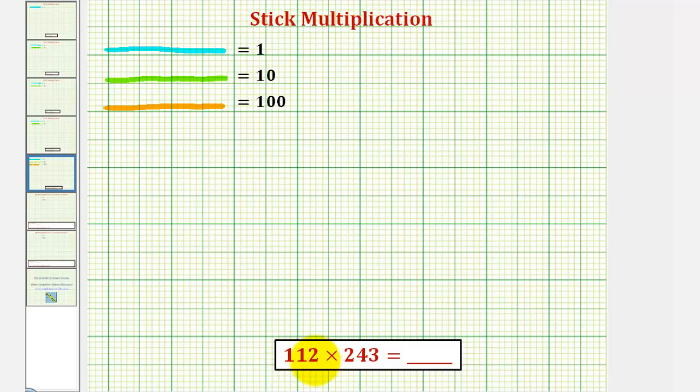We'll begin by modeling 112, which would be one orange stick, one green stick, this would be 110, and two blue sticks for 112. Again, we have 100 plus 10 plus 2 for 112.